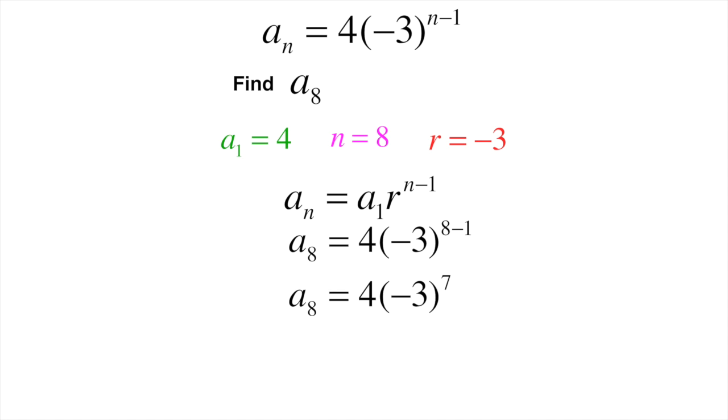Eight minus one is seven. So then it's going to be negative three times itself seven times. And that comes out to negative 2187. Then to finally simplify it, we just multiply four times negative 2187, which gives us our final answer of negative 8748.